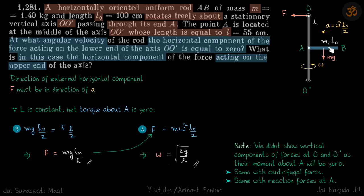We are given rod AB that can rotate about axis OO', rotating by omega. We are asked at what omega does the horizontal force at the hinge become zero. The length of AB is l₀, the length of axis OO' is l, and the mass of rod AB is m. The axis OO' is massless, hinged at the bottom and at the top so it can freely rotate.